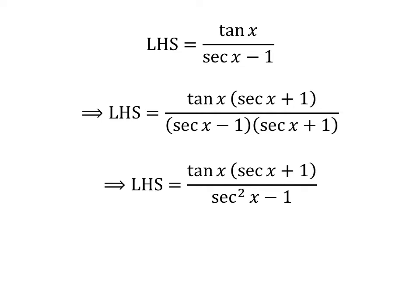We know secant of x minus 1 times secant of x plus 1 is equal to square of secant of x minus square of 1. Thus, the left hand side of the identity is equal to tangent of x times secant of x plus 1 upon square of secant of x minus 1.